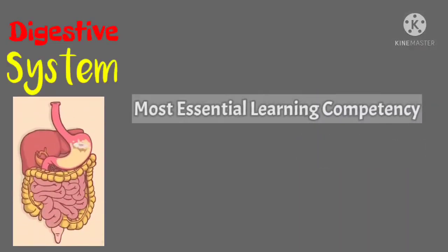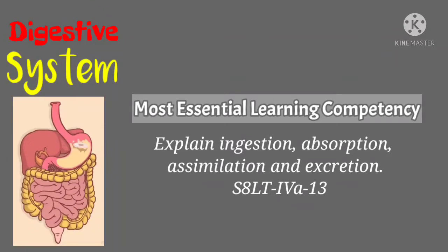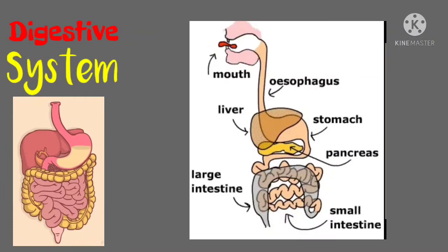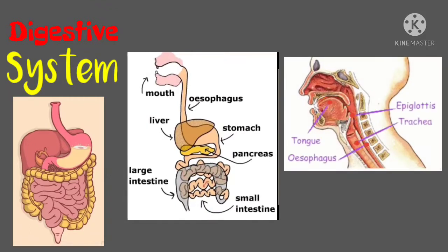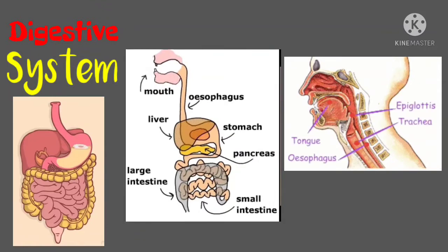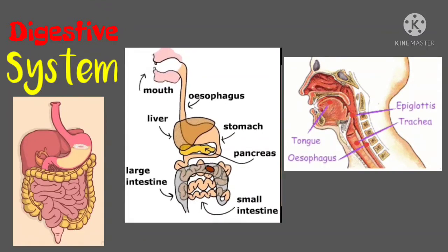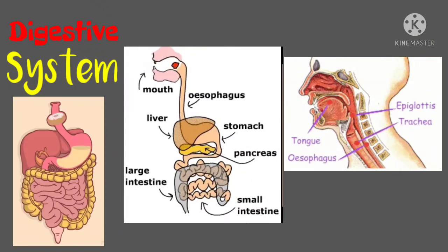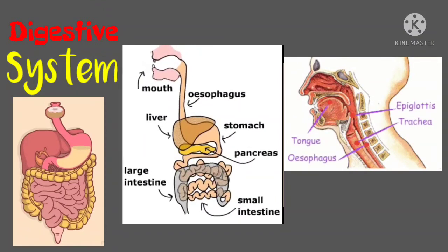Our MELT is to explain ingestion, absorption, assimilation, and excretion. In this video, we will describe the functions of each organ of the digestive system and trace the pathway of food through the digestive tract. And also, we will explain how ingestion, absorption, assimilation, and excretion take place in the body. So let me discuss first the basic parts of the human digestive system and its function.